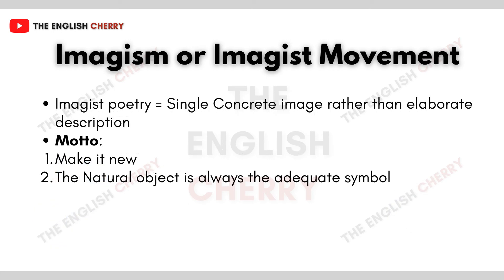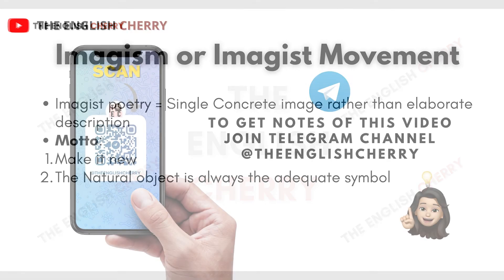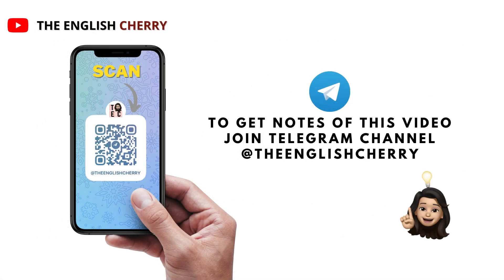With this we can finally say that an Imagist poem is one that is based on a single concrete image rather than elaborate description. Imagists believed in mottos like 'make it new' or 'the natural object is always the adequate symbol.' This ends today's video — thank you for your attention and I look forward to seeing you in the next one.